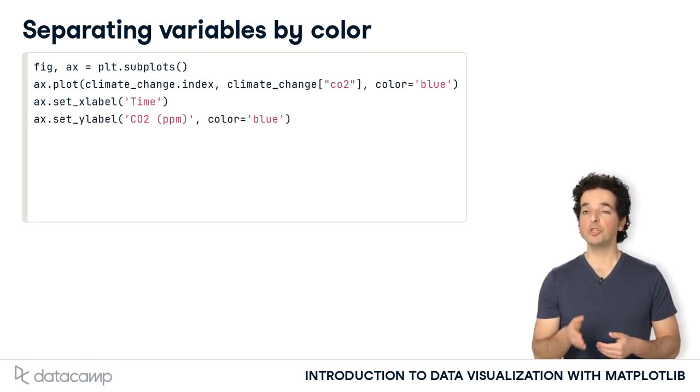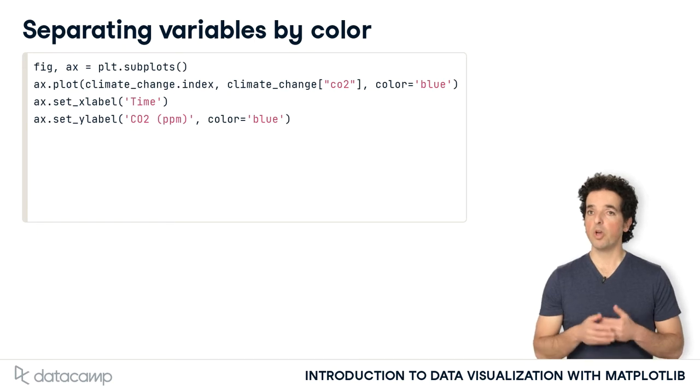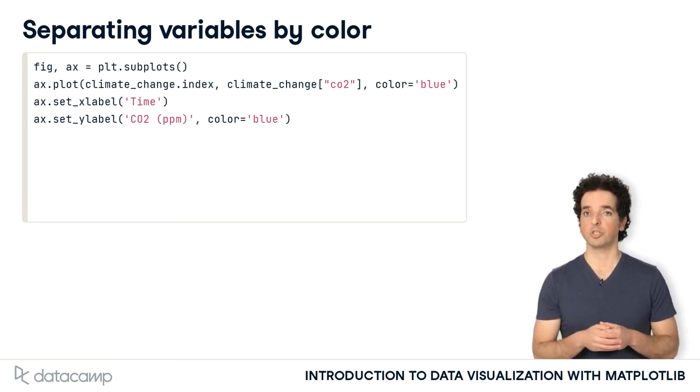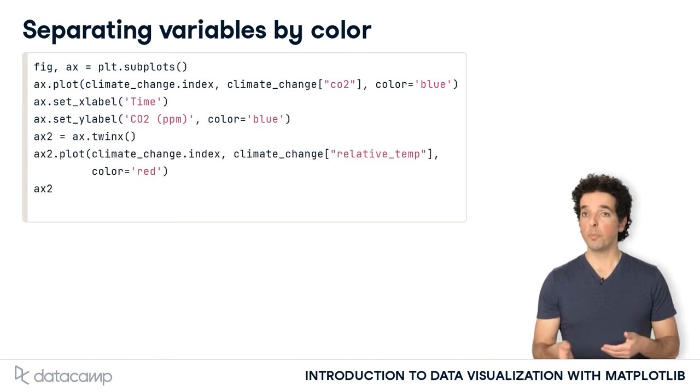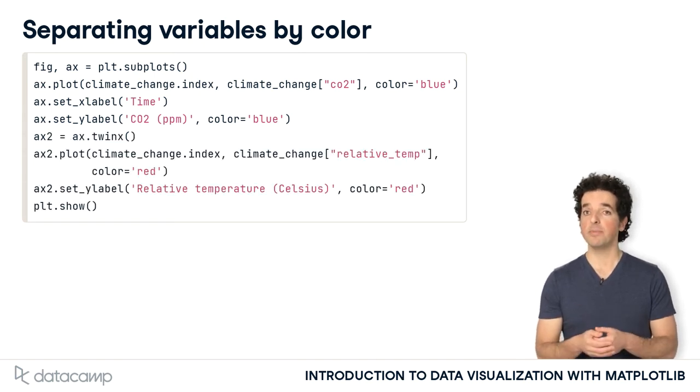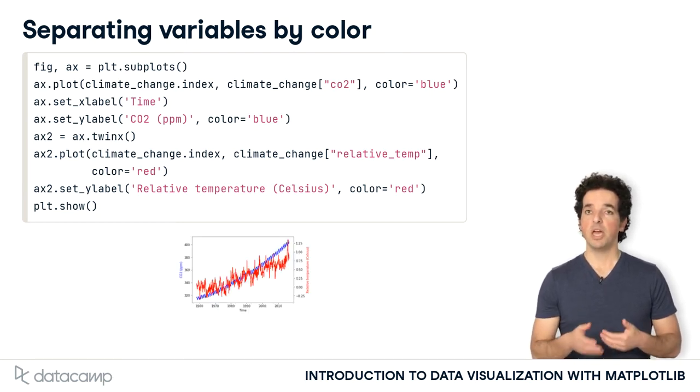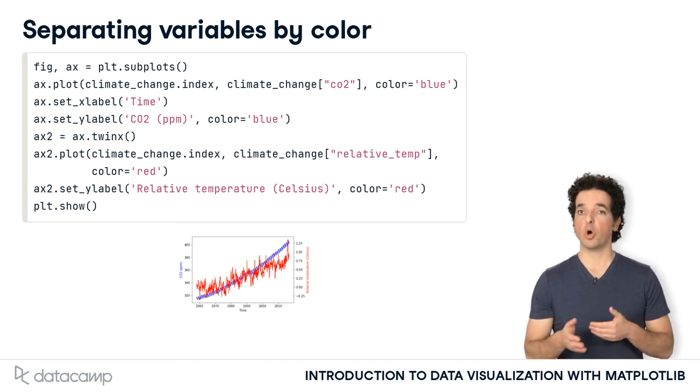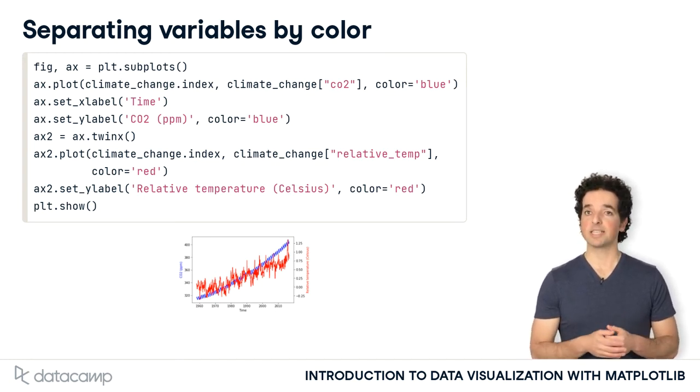We add color to the first variable using the color keyword argument in the call to the plot function. We also set the color in our call to the set_y_label function. We repeat this in our calls to plot and set_y_label from the twin axes object. In the resulting figure, each variable has its own color, and the y-axis labels clearly tell us which scale belongs to which variable.